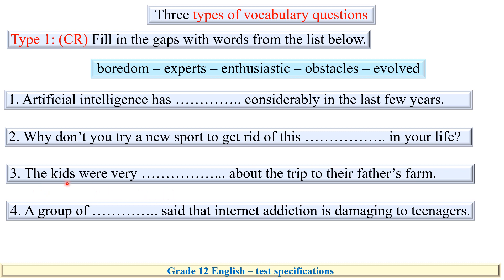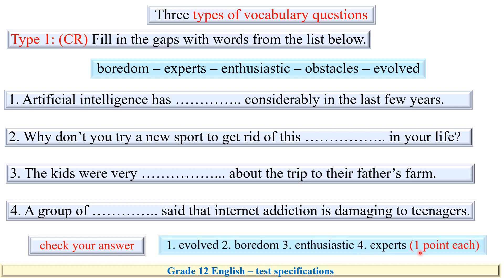The kids were very - we want to describe the kids about the trip to their father's farm. To describe a noun, we need an adjective, right? And there is only one adjective right here. And a group of, a group of people, a group of officials, said that internet addiction is damaging to teenagers. Must be a group of experts. That's right. One point each.